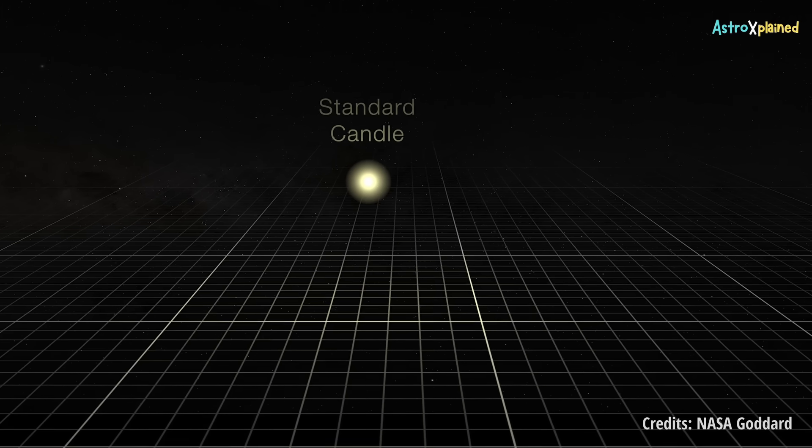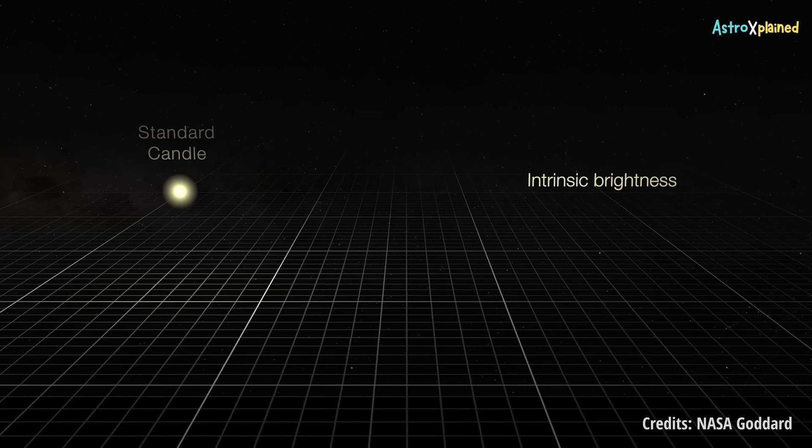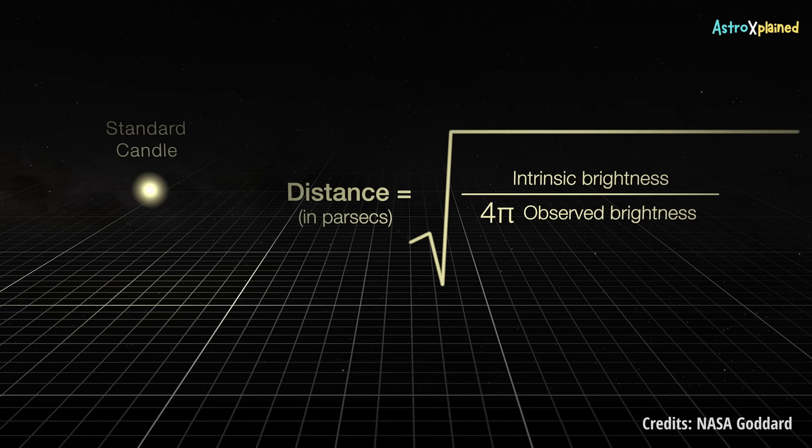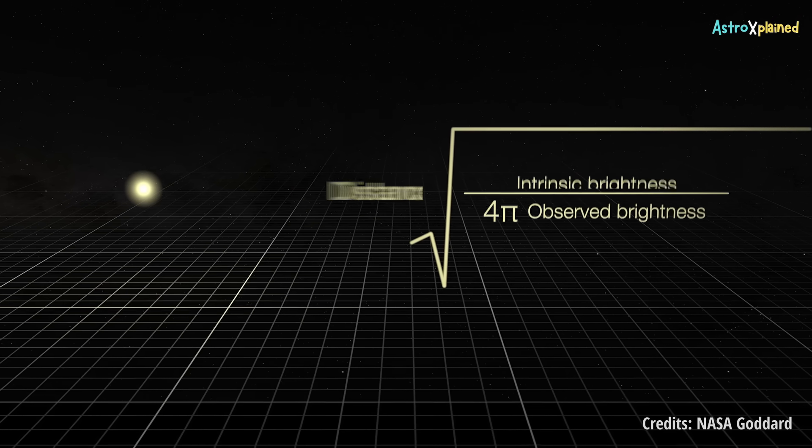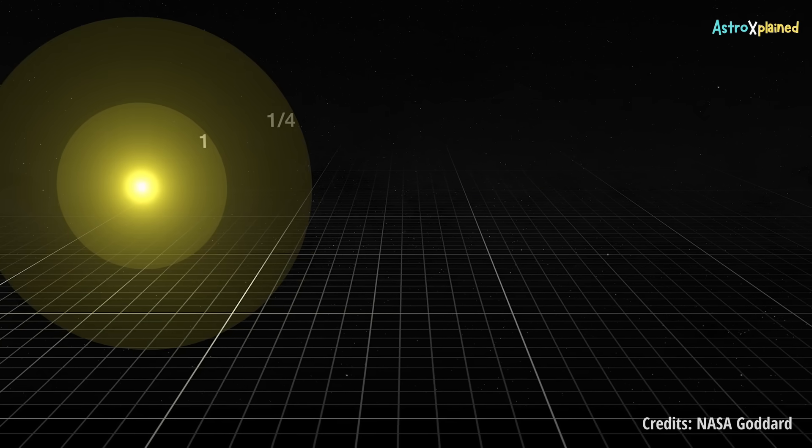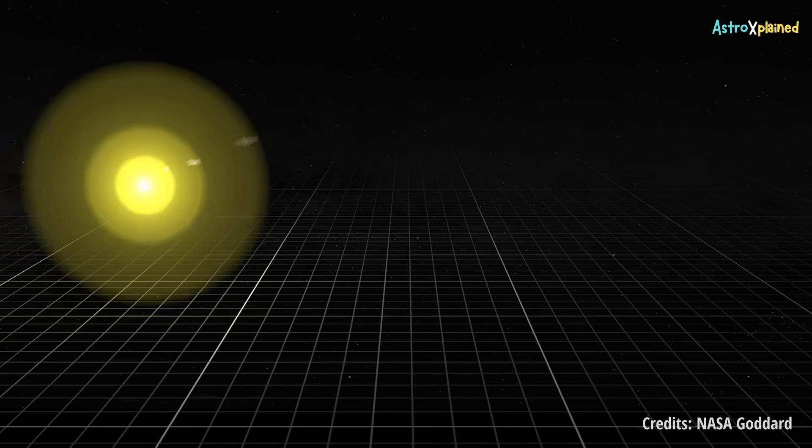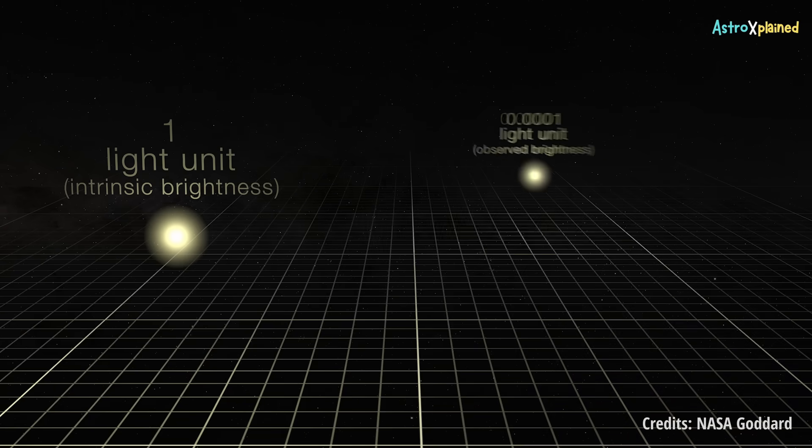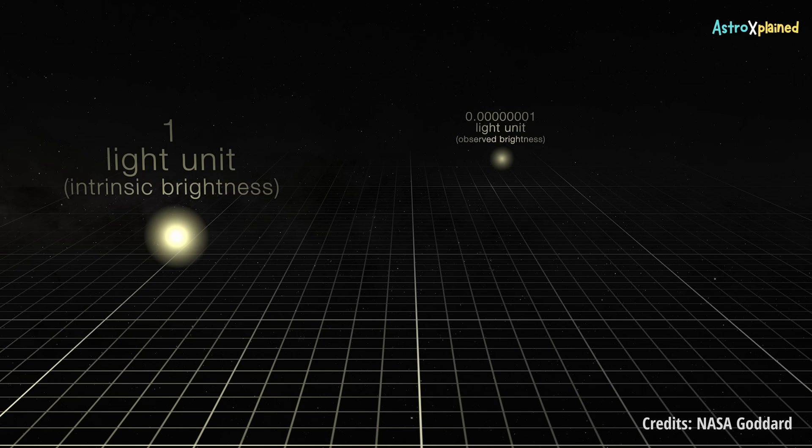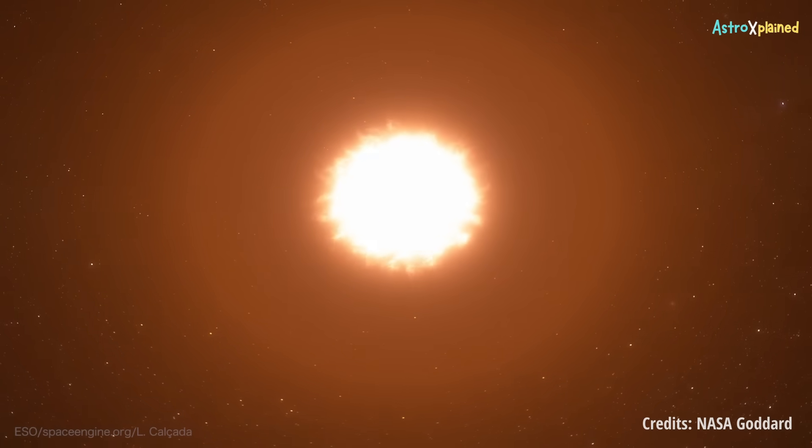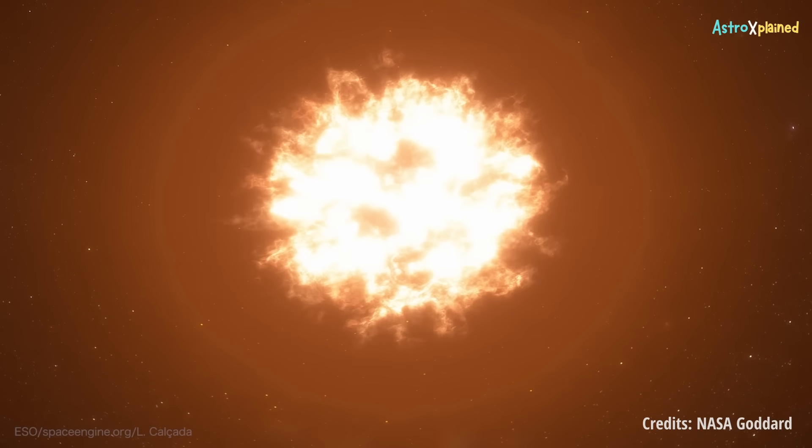A standard candle is a type of object or event that emits a specific, known amount of light, allowing scientists to find its distance with a straightforward formula. This works because light sources appear predictably dimmer the farther they are from an observer. Since astronomers know how much light a standard candle gives off, they can determine its distance by measuring how dim it appears from Earth.